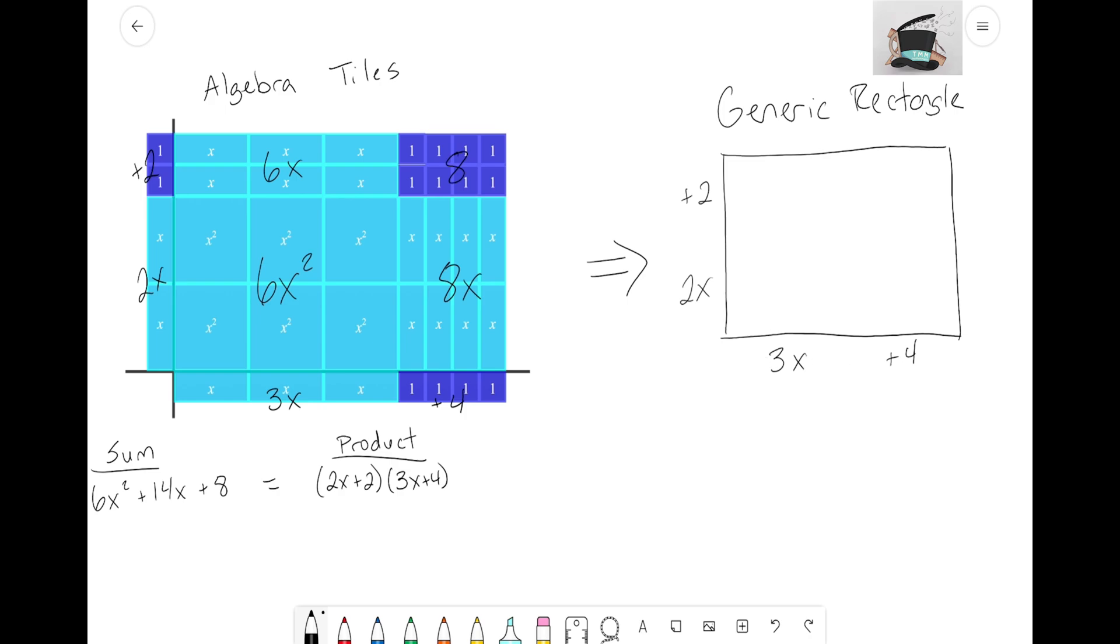Now since this left side is 2x plus 2 and those are two separate types of tiles, looking back here we had the x's and the unit tiles, what I'm going to do is I'm just going to draw a line going straight across.